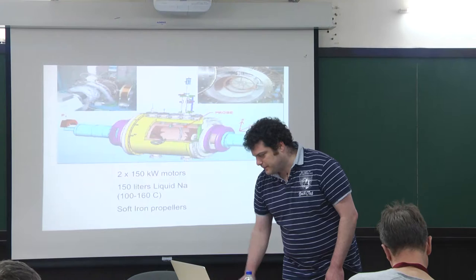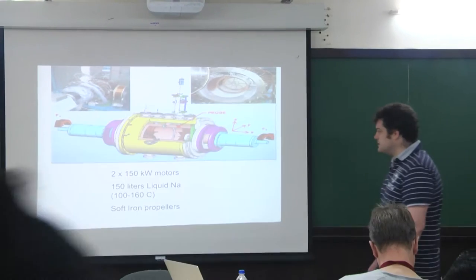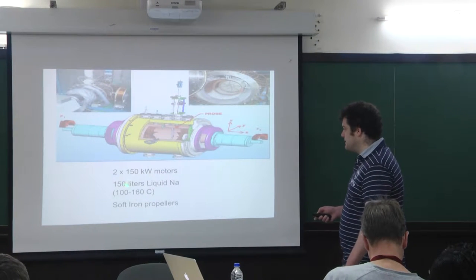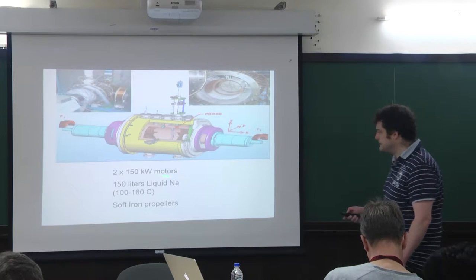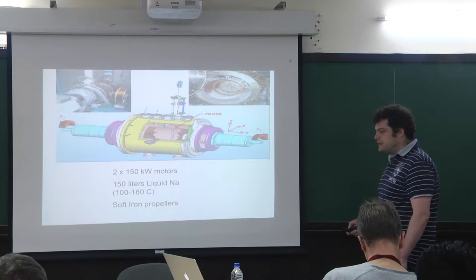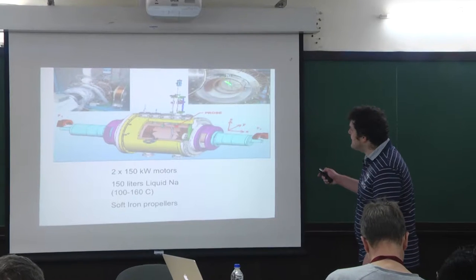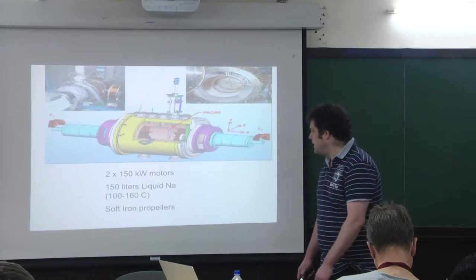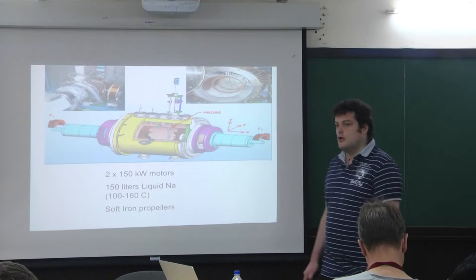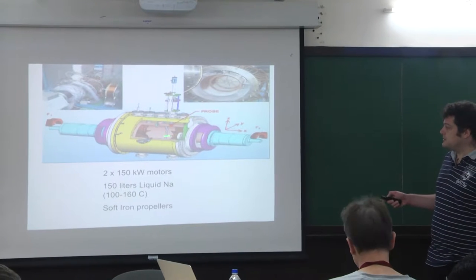The experiment is a cylinder containing a little more than 150 liters of liquid sodium. The temperature of the sodium is maintained constant by a circulation of oil above the melting temperature of sodium, roughly 100 degrees. The fluid is put into motion by the rotation of two disks fitted with eight blades that enhance the driving of the fluid. We have 300 kilowatts of motors to drive the flow, so the flow will be very turbulent, with a kinetic Reynolds number very large and displaying very large fluctuations.